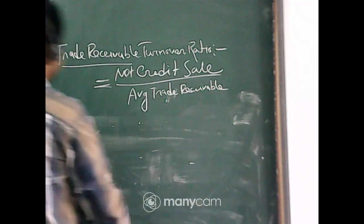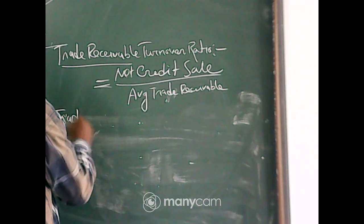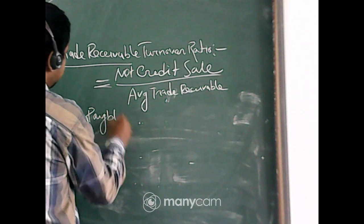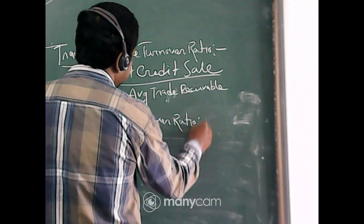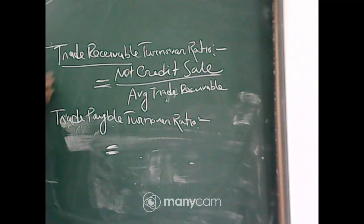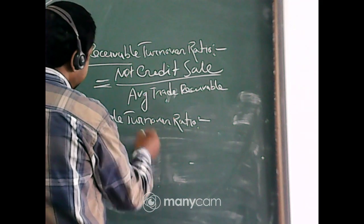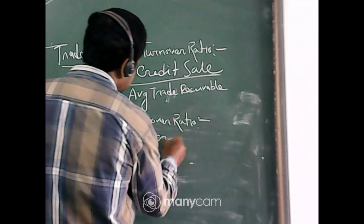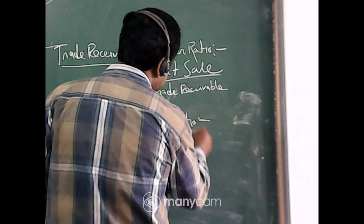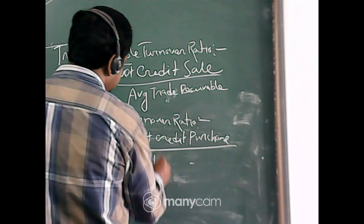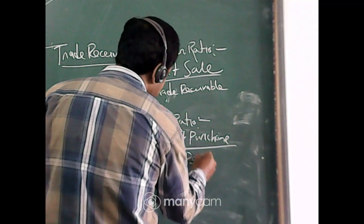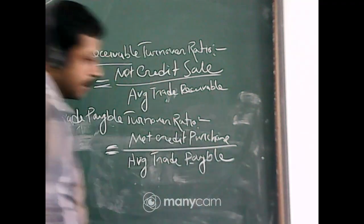The second turnover ratio is trade payable turnover ratio. This is just the opposite side of trade receivable. Trade receivable is related to credit sales; trade payable is related to purchases — that is creditors. So the formula is: net credit purchases divided by average trade payable.